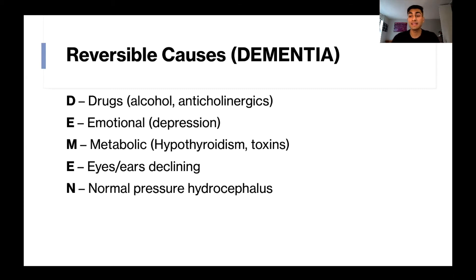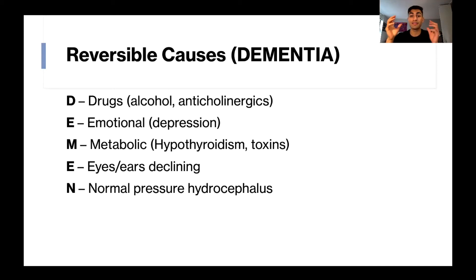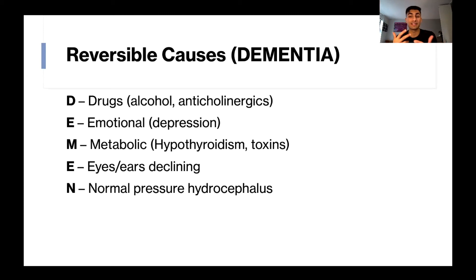N is for normal pressure hydrocephalus, which refers to a buildup in the cerebrospinal fluid within the ventricles of the brain. This buildup exerts pressure and compresses the brain, and as a result we get the cognitive decline and dementia symptoms.